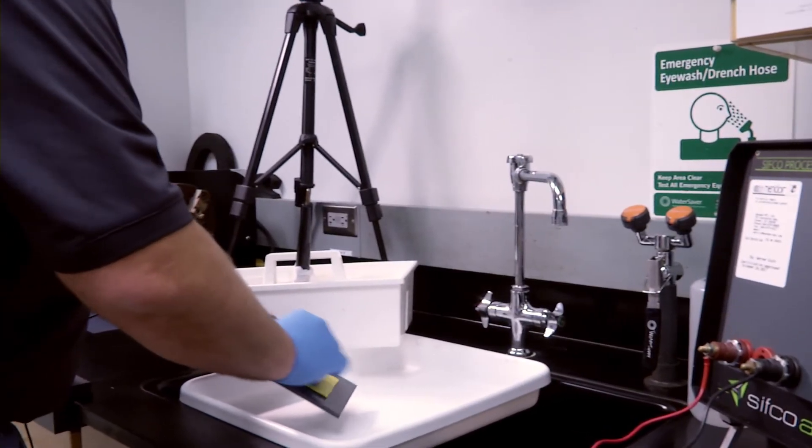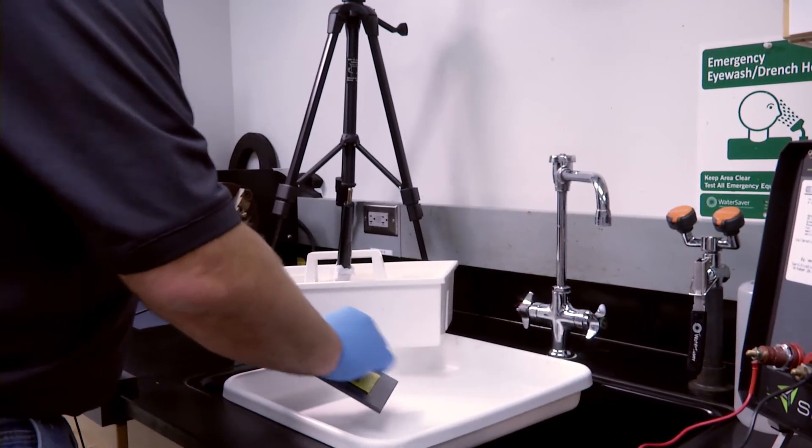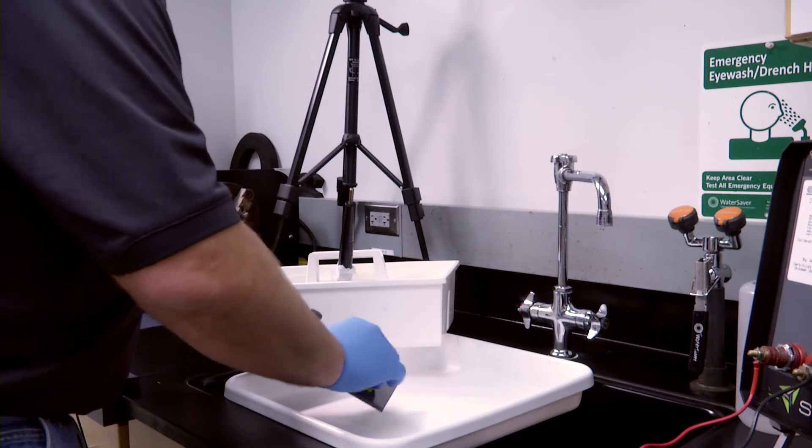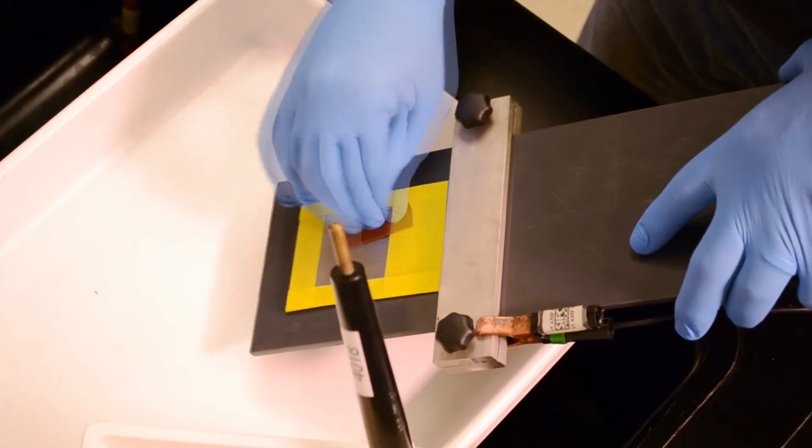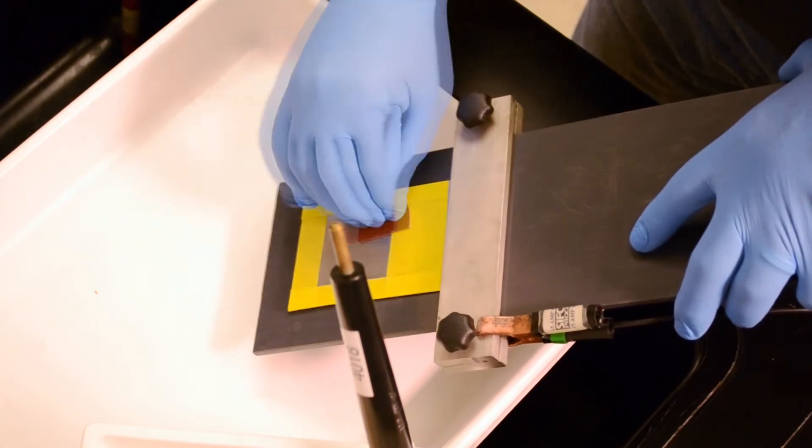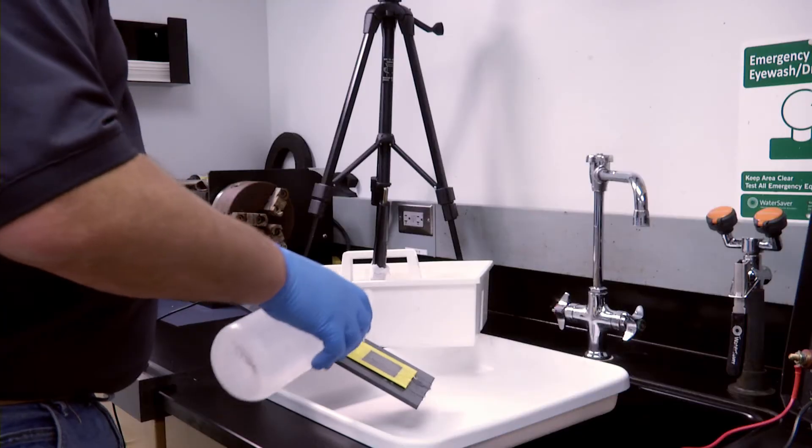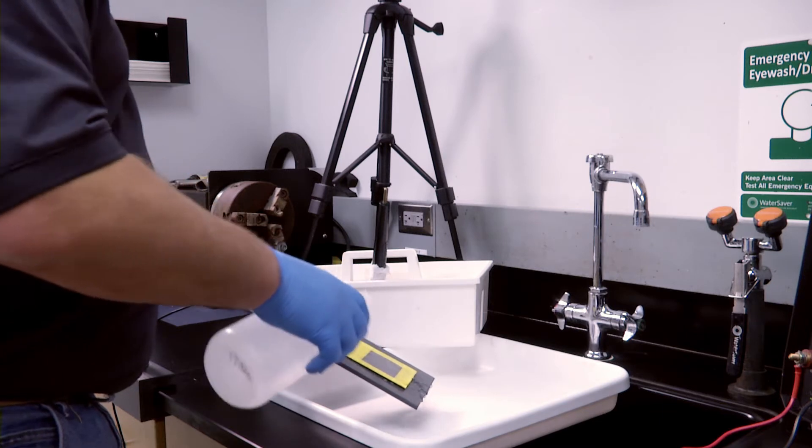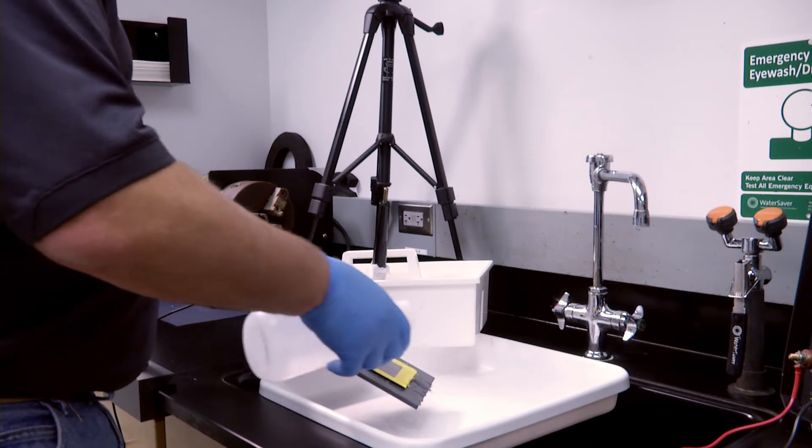When plating on parts susceptible to hydrogen embrittlement, an abbreviated preparatory procedure is used starting with a degreasing operation followed by roughening up of the surface by blasting or mechanically abrading, and then rinsing to ensure all foreign materials have been removed, and then finally plating.